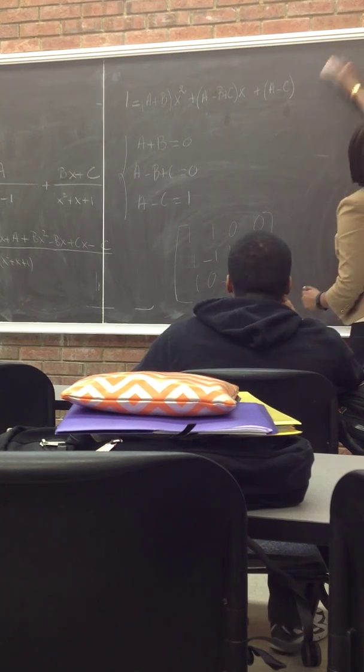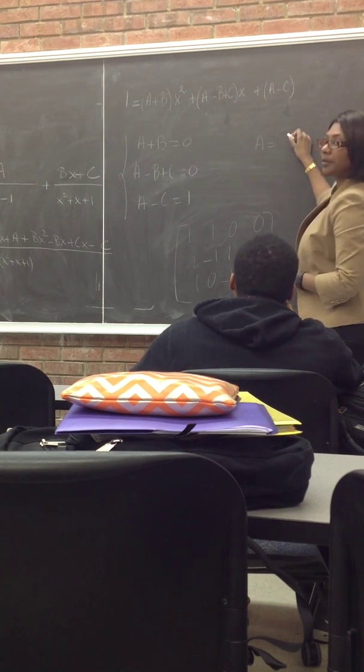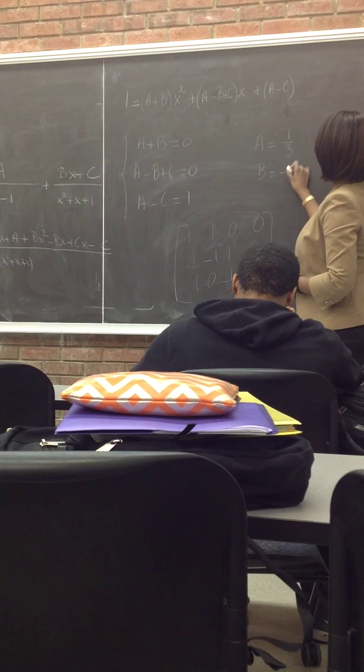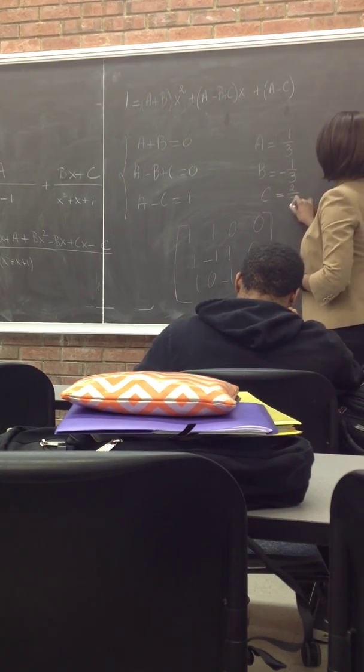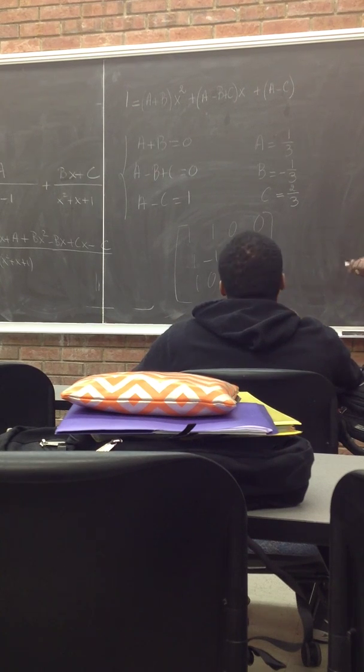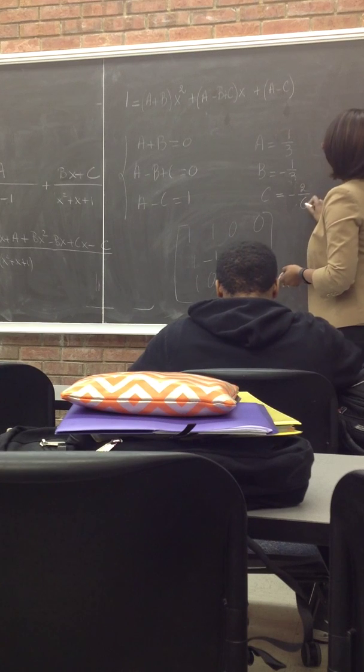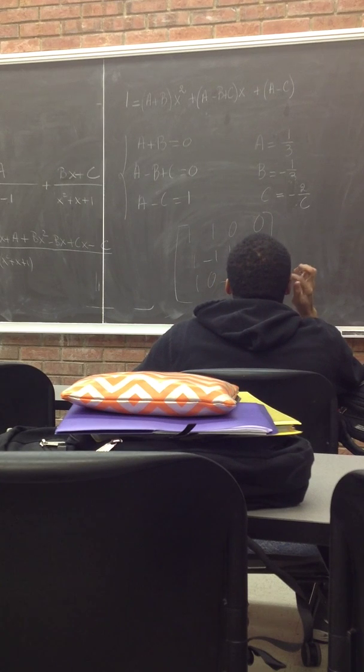It's not like a computer. Yeah, so binary. C is negative 2 thirds. Negative 2 thirds. Yep. 1 minus 1. Yeah, that's right. No. What is 1 minus 1 third? 2 thirds. Yeah, that's right. That's right. Sorry. Alright.